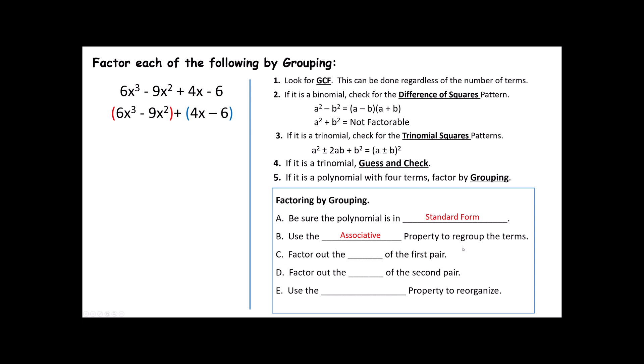Then, I'm going to factor out the greatest common factor of the first pair. Notice that we said this did not have a GCF that works for all of them. This time we're just checking to see if the first pair have a GCF. 6x³ - 9x². Notice that both 6 and 9 have a 3 hidden inside of them, and notice that both terms have at least two x's. So what I'm going to do is I'm going to pull out everything they have in common, and that's going to be the 3 and the x². 3x² times 2x gives me the 6x³, and 3x² times 3 gives me the 9x².